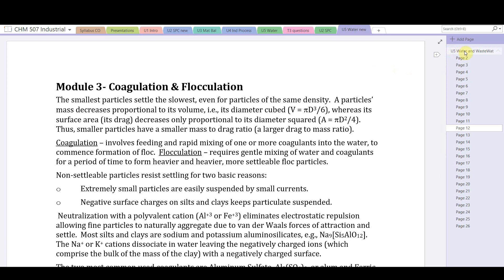Unit five water and wastewater, this is page 12, module 3: coagulation and flocculation. The smallest particles settle the slowest, even for particles of the same density. That seems strange.